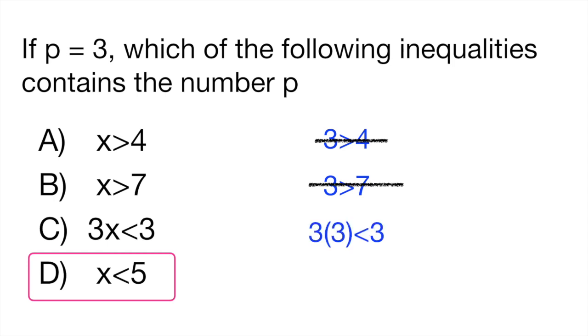Then you would say 3 times 3 minus 3. Is that true? Absolutely not, because we would have 9 minus 3 is less than 3. And then finally, 3 is less than 5. That is absolutely correct.